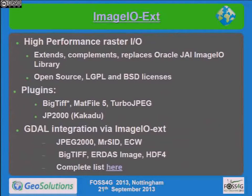ImageIOx is an extension for ImageIO that we developed, allowing you to connect to GDAL, JPEG2000, MATLAB MATFILE5 (the last open version of MATLAB files), and TurboJPEG. There are also rewritten formats from standard ImageIO, like TIFF — mostly rewritten to support float data, double data, BigTIFF, and JPEG2000 compression, though that's a little tricky.